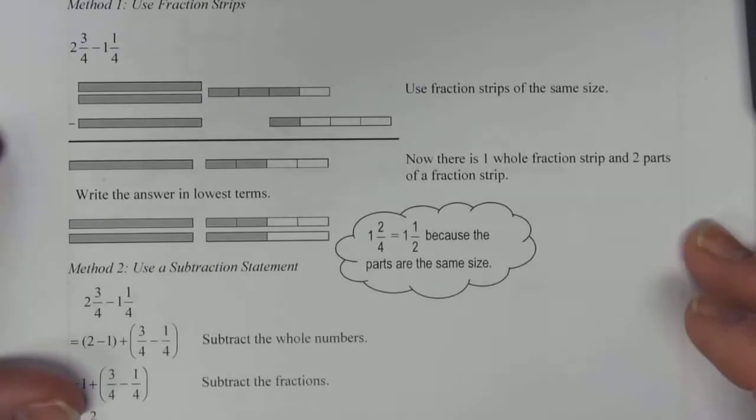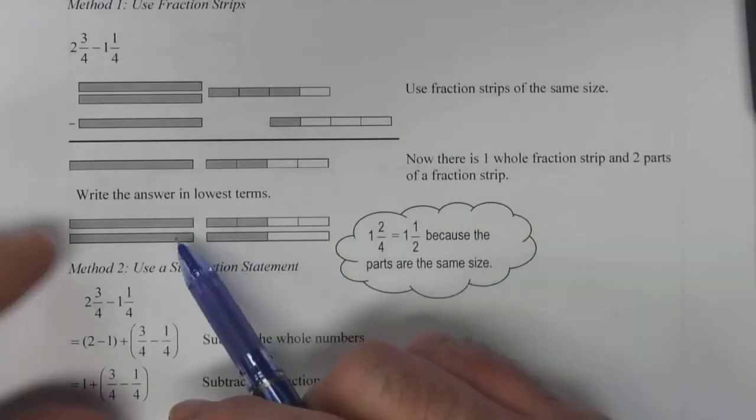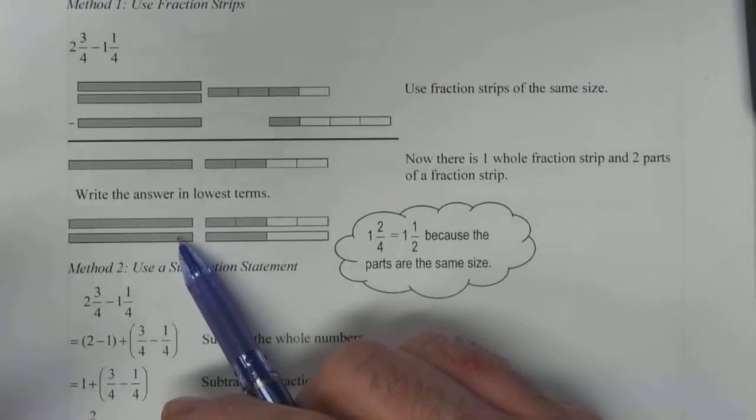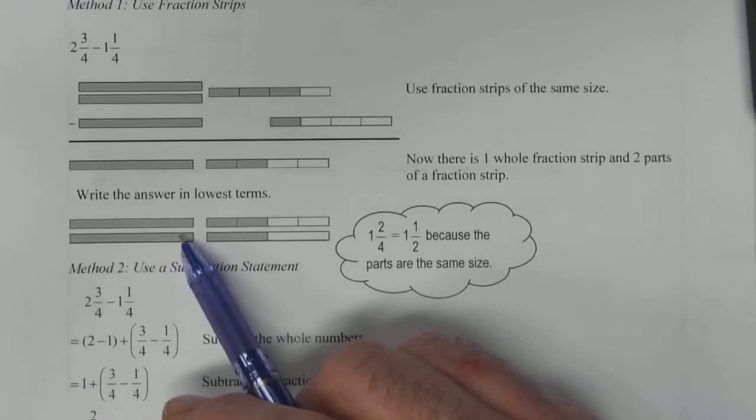Now of course we can write this in lowest terms as well. We have one whole one. That doesn't change. That stays constant. You only ever change the fraction part when you're putting into lowest terms.